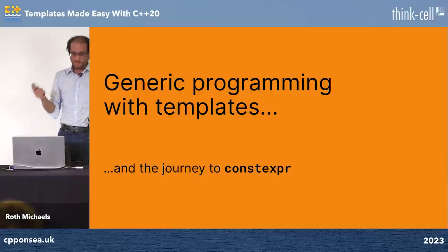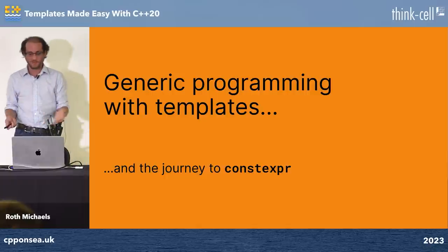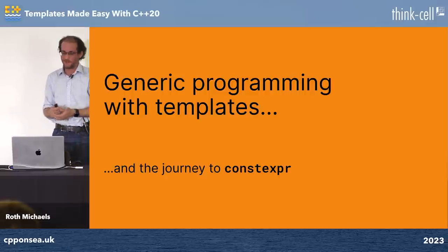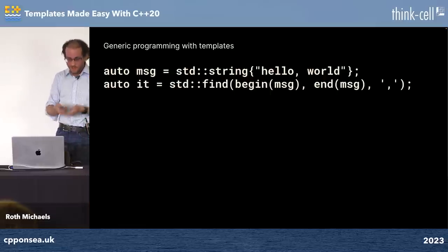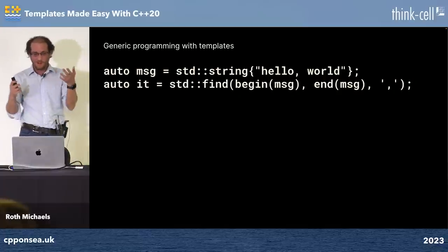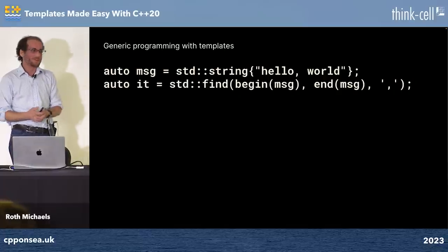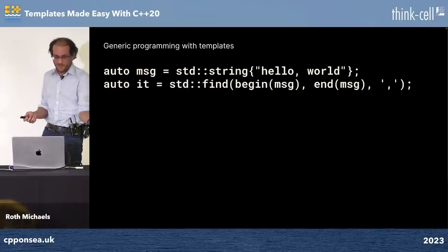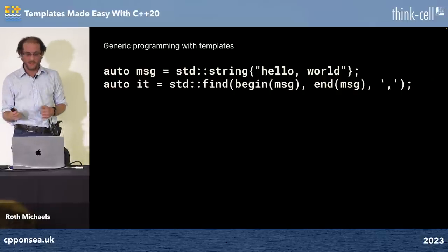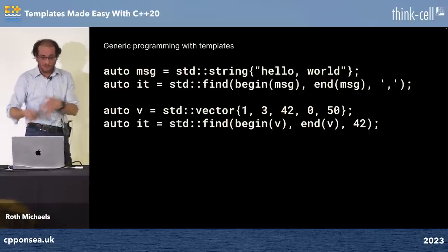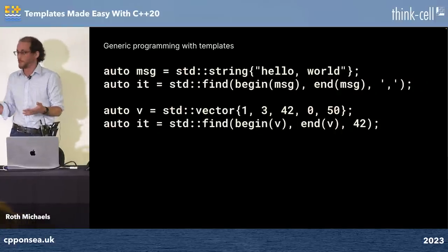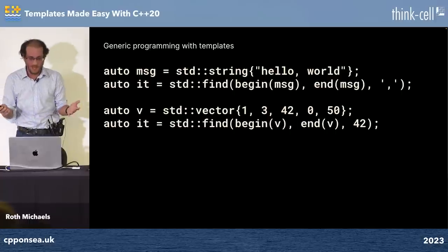Our story starts with generic programming using templates, and this will bring us on a journey to constexpr, which has been a nice feature for compile-time programming we've had for a while. At a very basic level, templates allow us to have generic algorithms in the standard library. We can have a string that says "hello, world" and use find to find the comma in it, or we can have a vector of numbers and use the same find algorithm to find 42 in it.